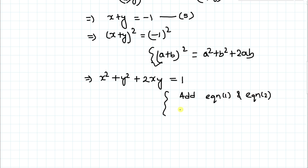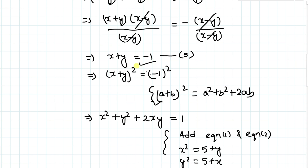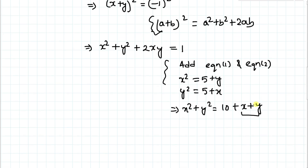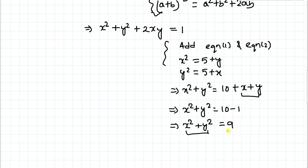Now I'll add equation 1 and equation 2. From equation 1: x squared equals 5 plus y. From equation 2: y squared equals 5 plus x. Adding both gives x squared plus y squared equals 10 plus x plus y. From equation 5, x plus y equals minus 1, so x squared plus y squared equals 10 minus 1, which gives x squared plus y squared equals 9.